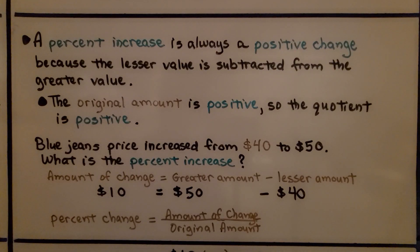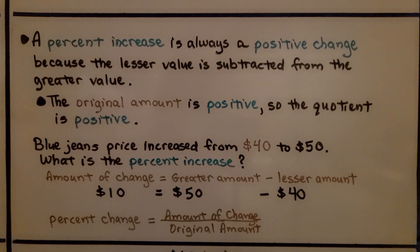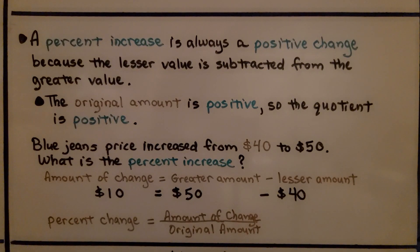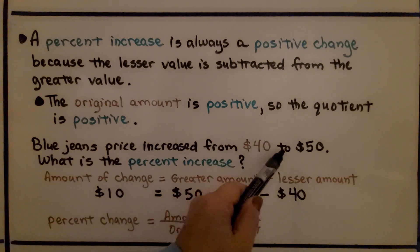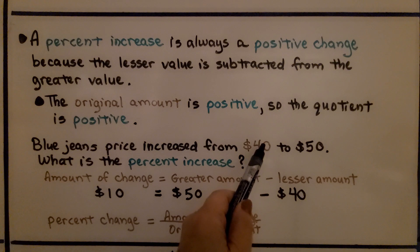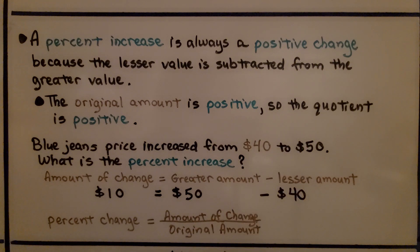A percent increase is always a positive change, because the lesser value is subtracted from the greater value. The original amount is positive, so the quotient is positive. If we had blue jeans priced as an increase from $40 to $50, that's the original amount, that's the new amount, what is the percent increase? We do the amount of change is equal to the greater amount minus the lesser amount. That means $10 is $50 minus $40.